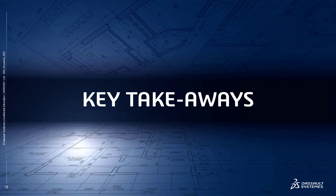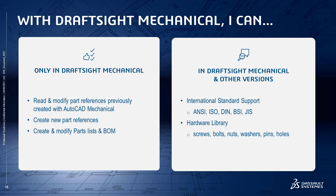To conclude, the key difference in DraftSight Mechanical is the possibility to update drawings containing mechanical entities in the DWG format. To achieve this, you will need support for part references and parts lists. This is a must-have feature in your company to produce mechanical drawings.